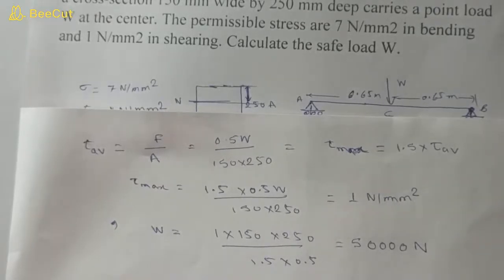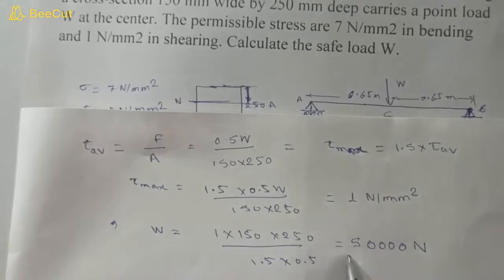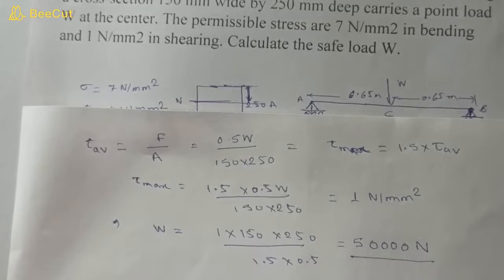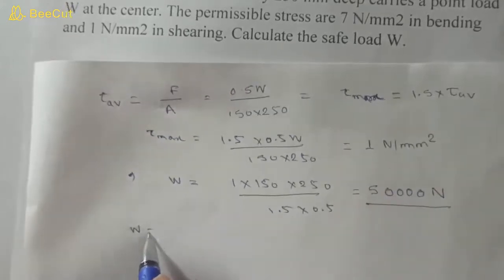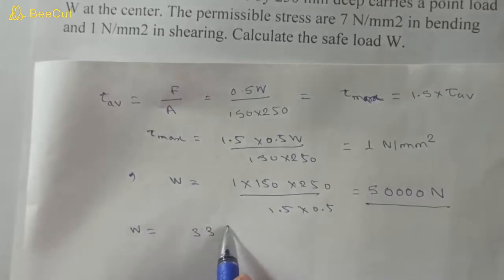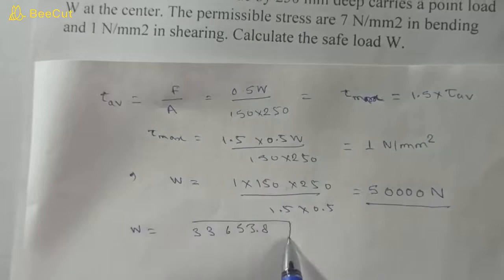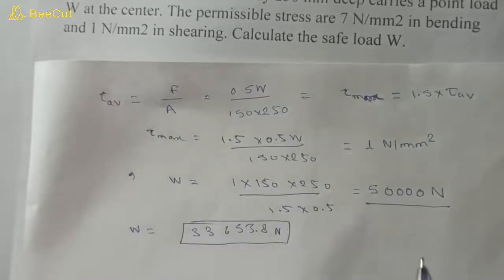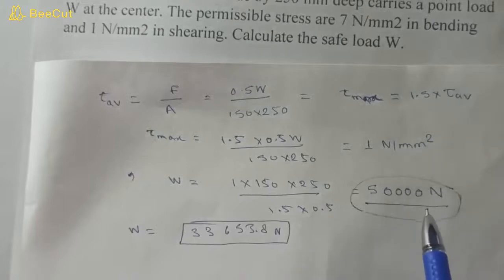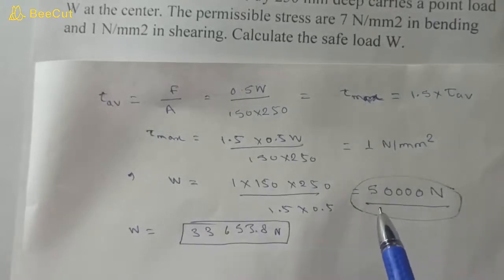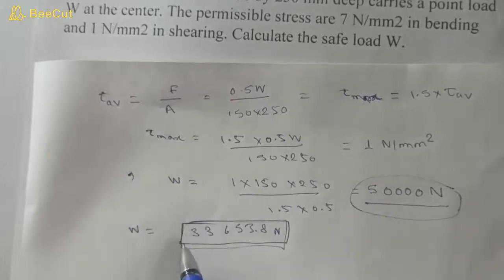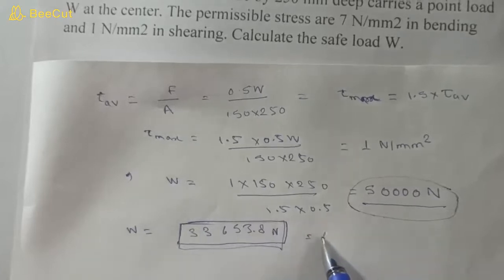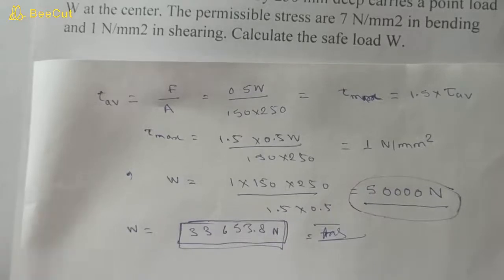As per the shear stress criterion, W = 50,000 N, and as per the bending stress criterion, W = 33,653.8 N. We choose the minimum value, W = 33,653.8 N, because if we applied 50,000 N, the beam would fail in bending before reaching the shear stress limit. I hope you understood — thanks for watching.